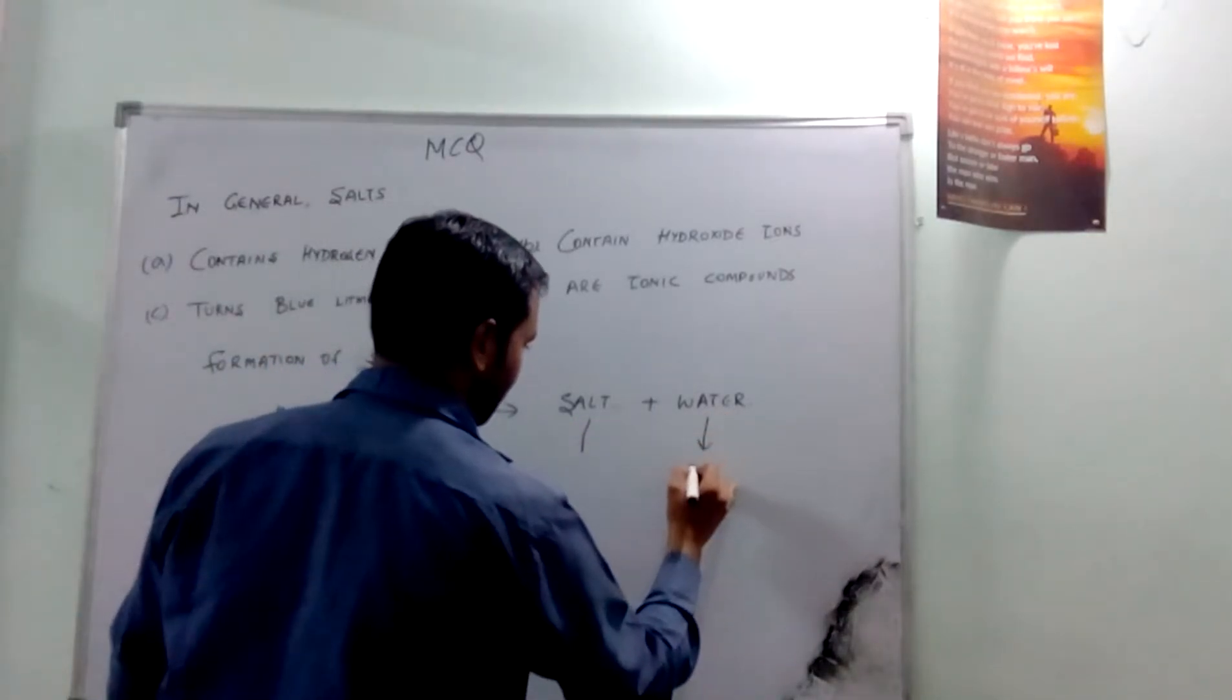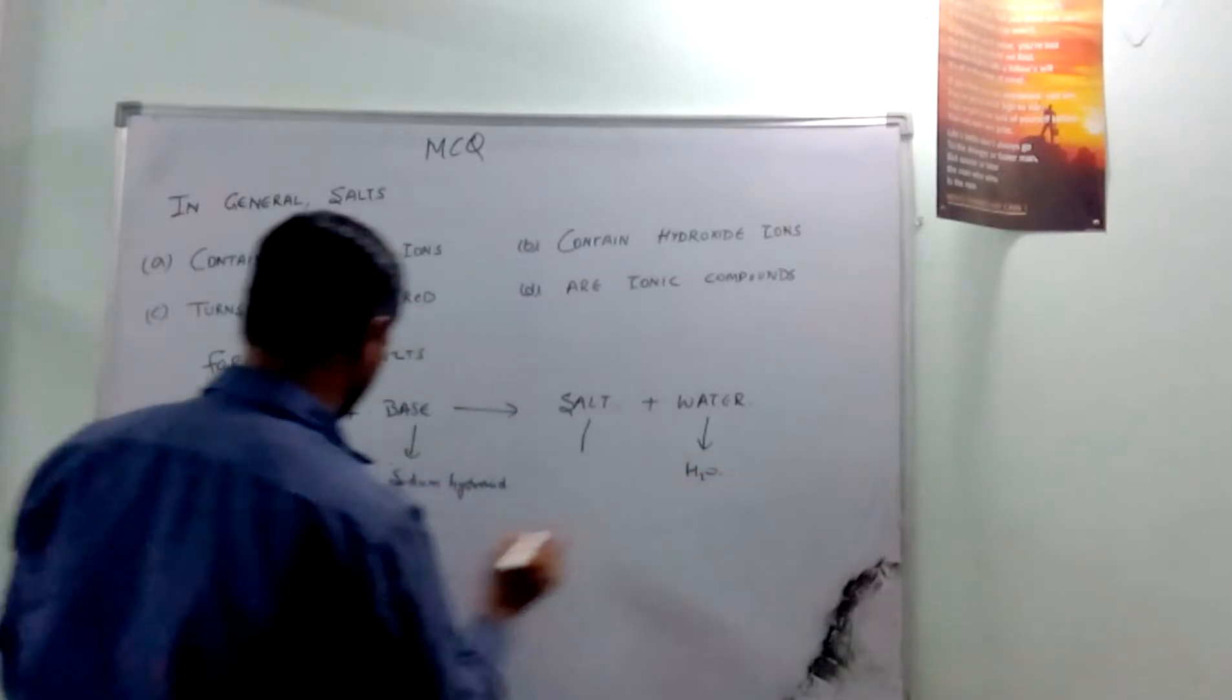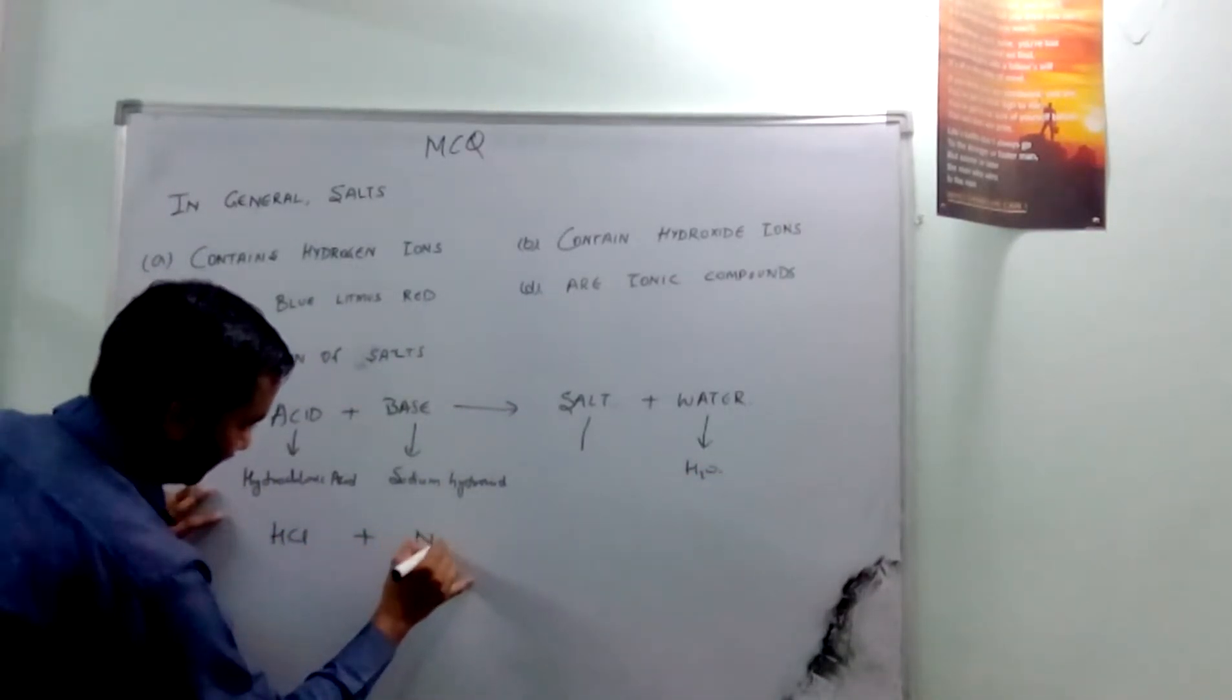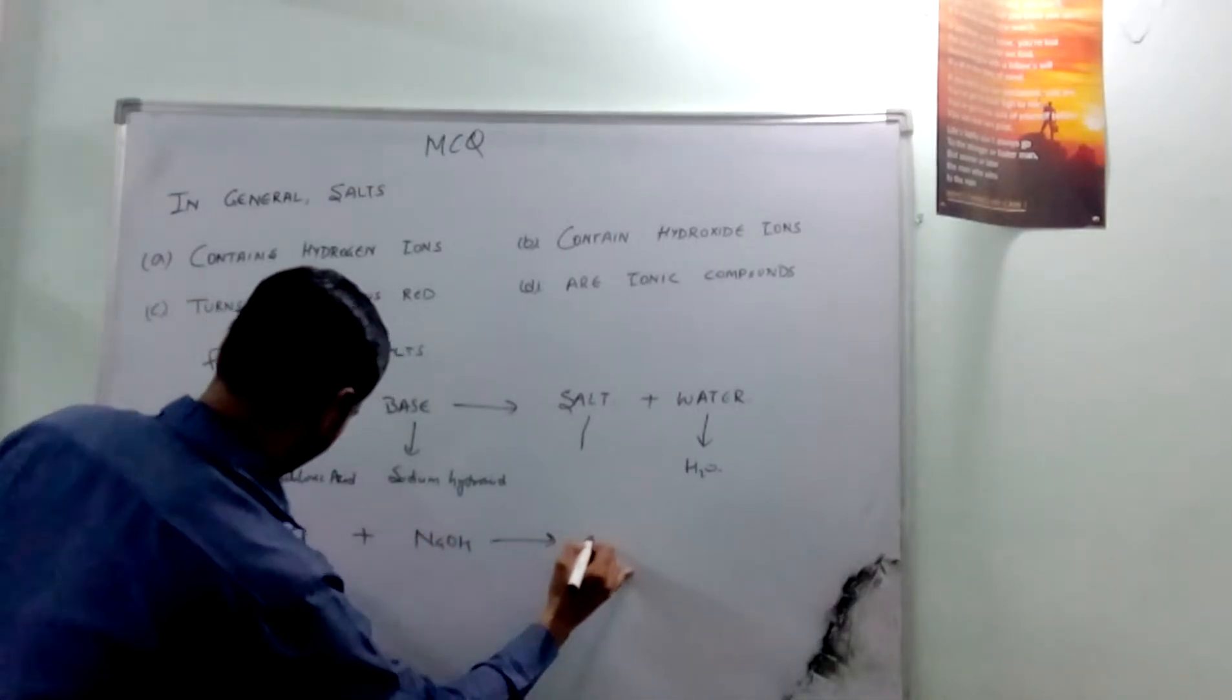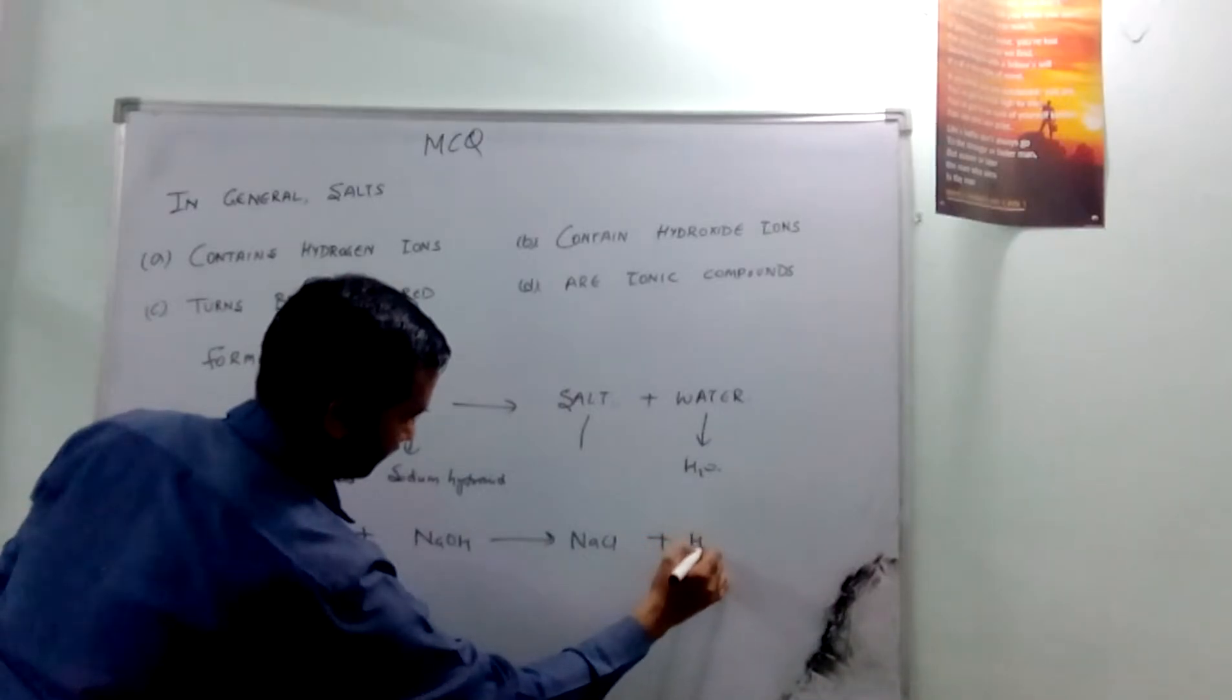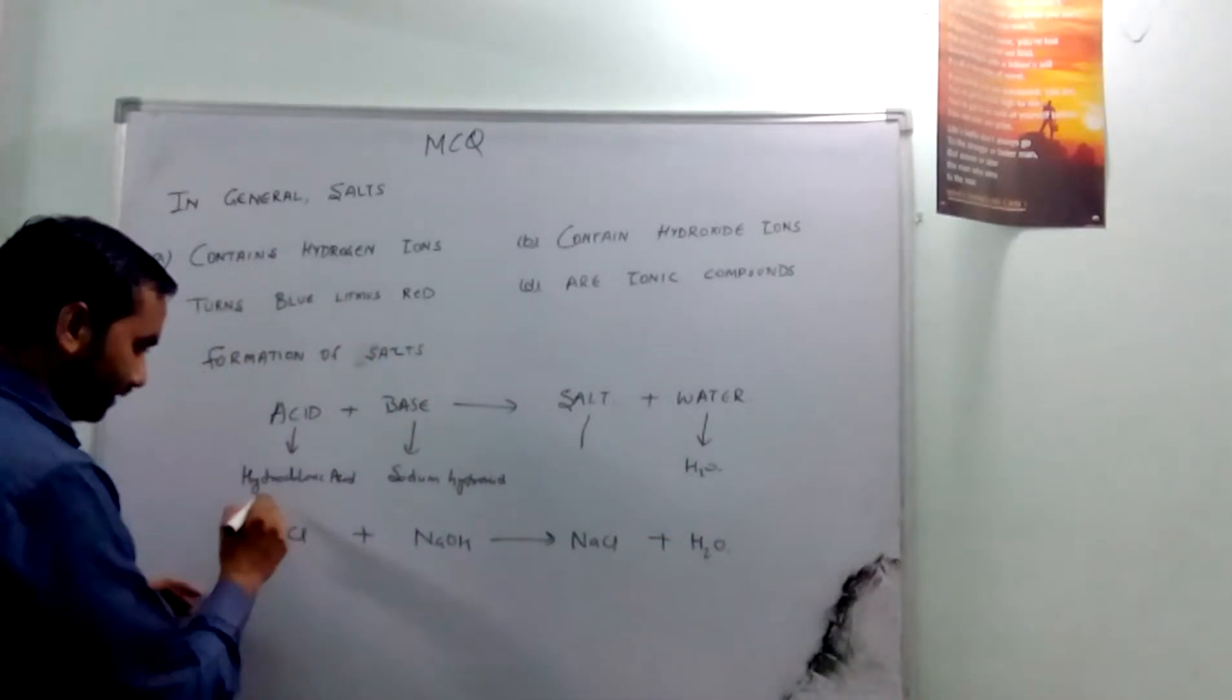Salt and water. So if I write the formula, it is HCl combined with NaOH to form NaCl plus H2O. This is a general example.